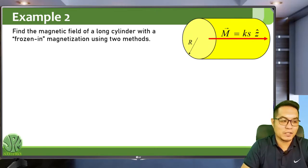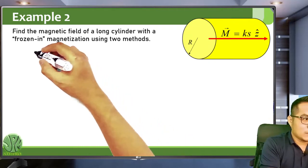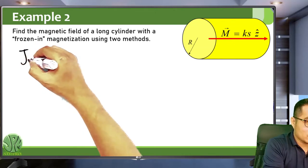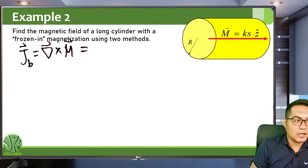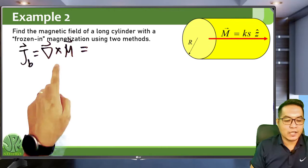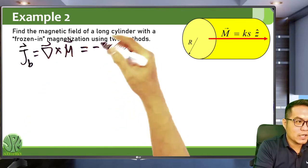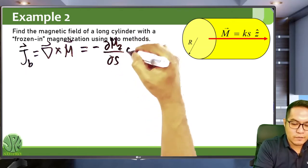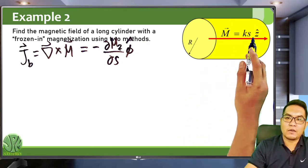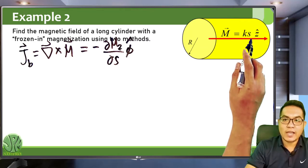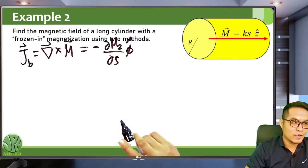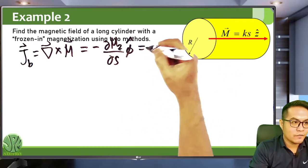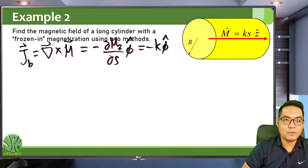Method 1: finding the bound currents. The volume bound current density J_b is the curl of M. Since the magnetization is only along the z-axis, we take the curl in cylindrical coordinates. The only surviving term is the partial derivative of the z-component of M with respect to S, giving J_b = −k phi-hat. The volume bound current density is uniform, equal to −k phi-hat.